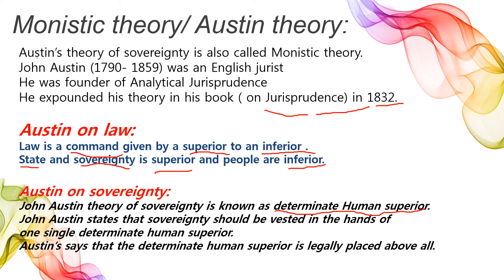John Austin states: this sovereignty should be vested in the hands of one single determinant human superior. Austin says that the determinant human superior is legally placed above all. Austin keh rahe hain ki sovereignty sirf usi ek definite human superior ke haath mein di ja sakti hai, kyunki sovereignty indivisible hai, inalienable hai, unlimited hai. Austin ne sovereignty ko absolute kara diya.